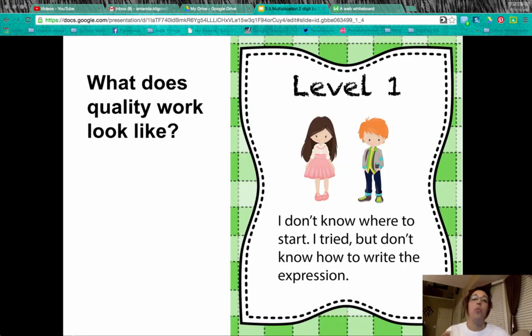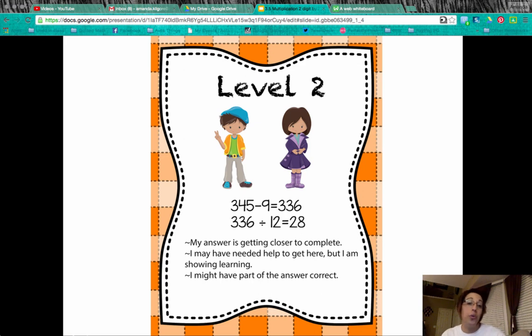So let's look at what does quality work look like. A level one for this word problem would be, I just don't know where to start. Maybe I tried, but I didn't know how to write the expression. A level two, maybe I got two expressions, so I kind of knew how to solve it and get an answer. So my answer is getting closer to complete. I may have needed help getting there, but I'm showing that I'm learning. I'm on the process. And I might have part of the answer correct.